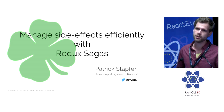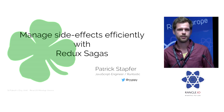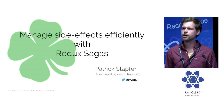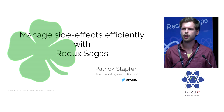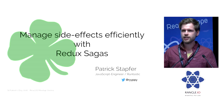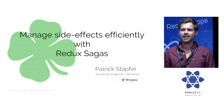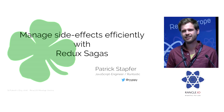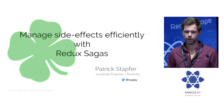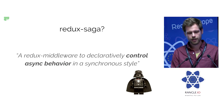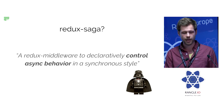First of all, who has heard about Redux Sagas? Okay, quite a few people. But strangely a lot of people are like, 'it's nice on paper but I don't have an idea how this works,' especially because they are using generators. So it's a middleware to declaratively control async behavior in a synchronous style, and this is where generator functions are super important.